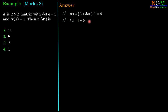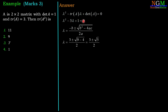The roots of this quadratic equation are the eigenvalues. Using the quadratic formula (−b ± √(b²−4ac)) / 2a, where b = −3, a = 1, c = 1, we get (3 ± √(9−4)) / 2 = (3 ± √5) / 2. Therefore λ₁ = (3 + √5) / 2 and λ₂ = (3 − √5) / 2.